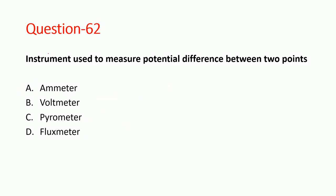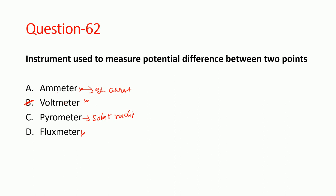Next question: what instrument is used to measure potential difference between two points? The ammeter is used to measure current. The flux meter is used to measure magnetic flux. The pyrometer is used for solar radiation. The voltmeter is used to measure the potential difference between two points. Voltmeter is the correct answer.